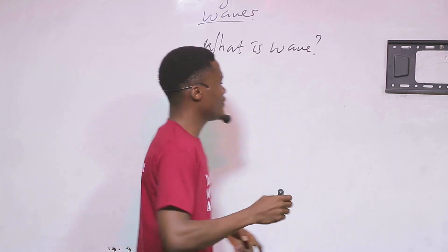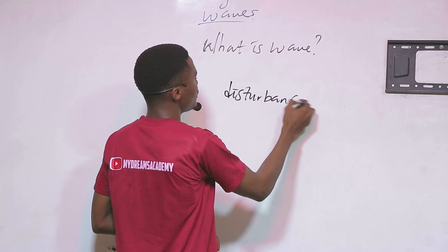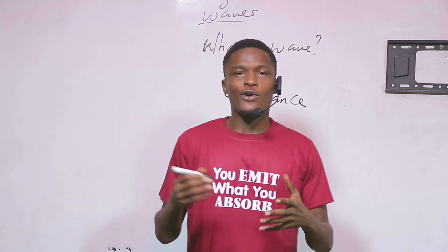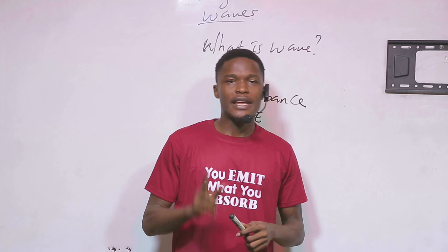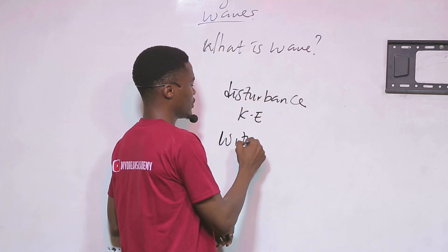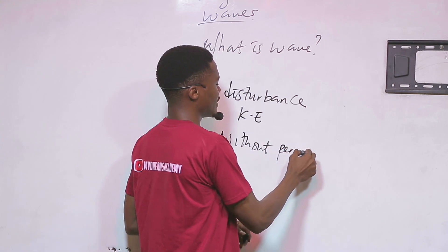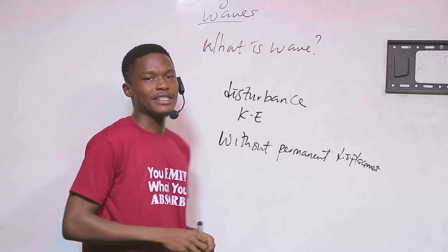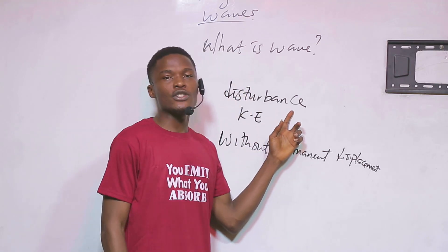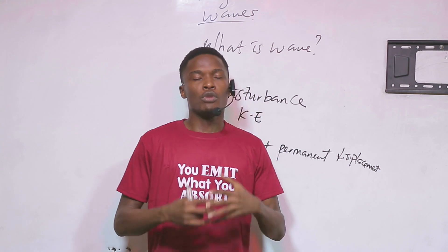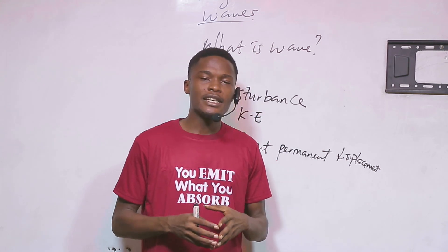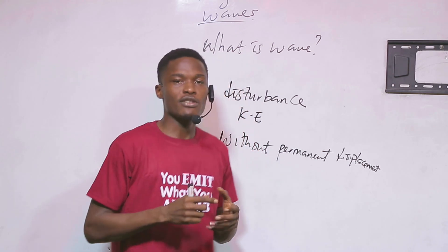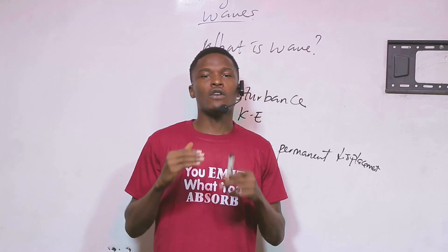So what does that mean? First, a wave is a disturbance — it is in the form of kinetic energy, and it is transmitted from one point to another in a medium without permanent displacement of the particles of that medium. A wave tries to remove an object from its state of equilibrium. Imagine you have a surface of still water, and all of a sudden you put a stone into that still water — the surface of the water will be disturbed.